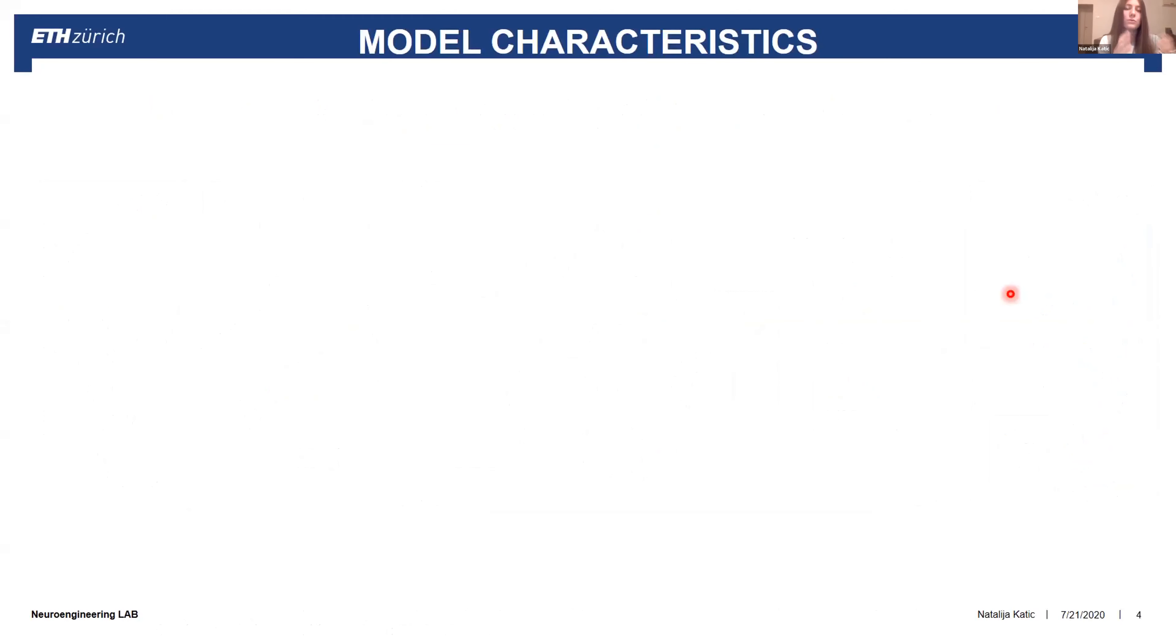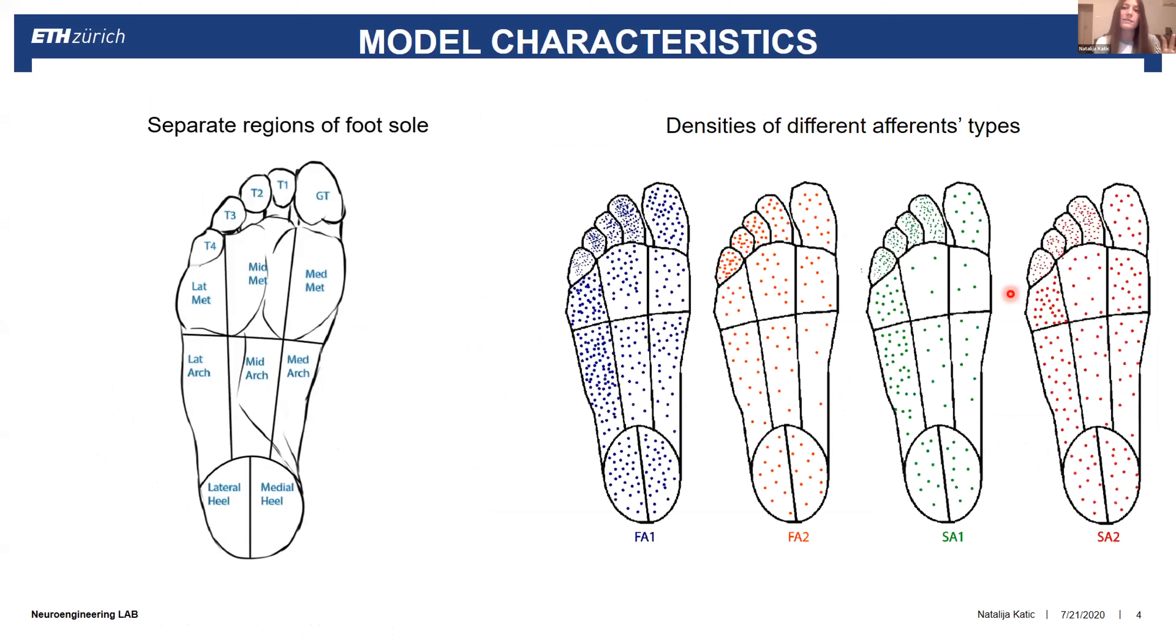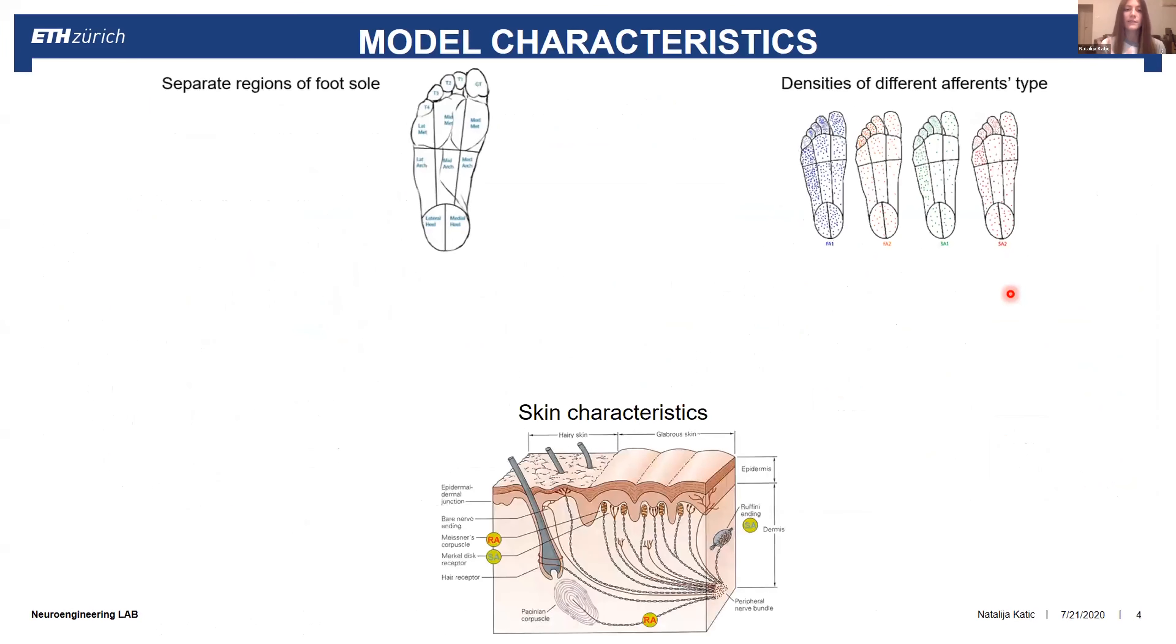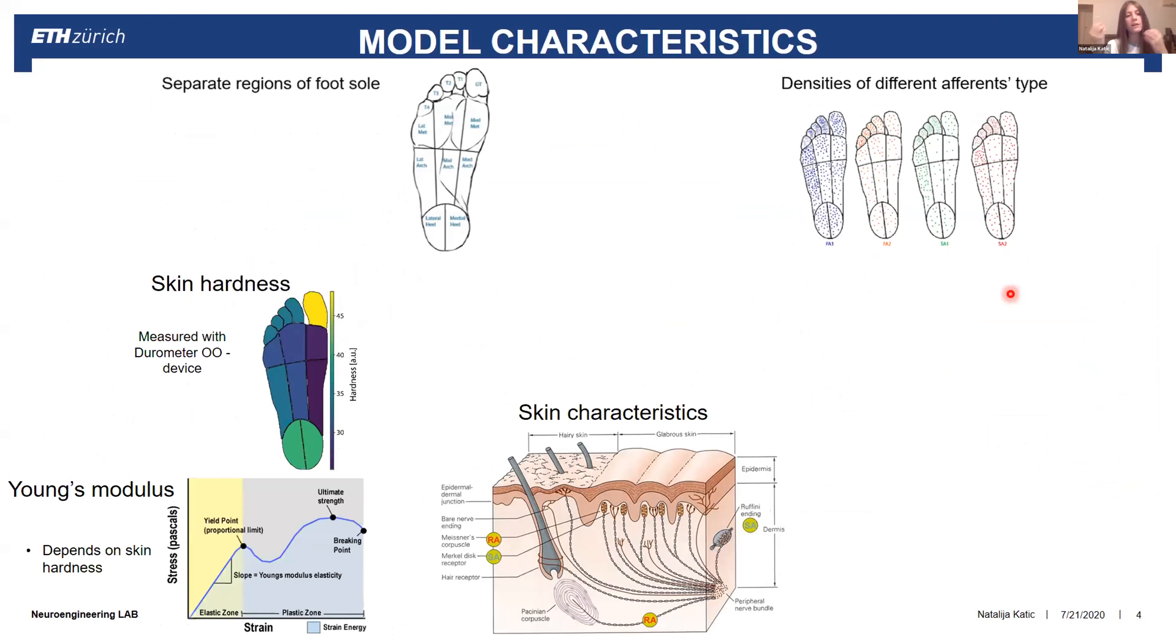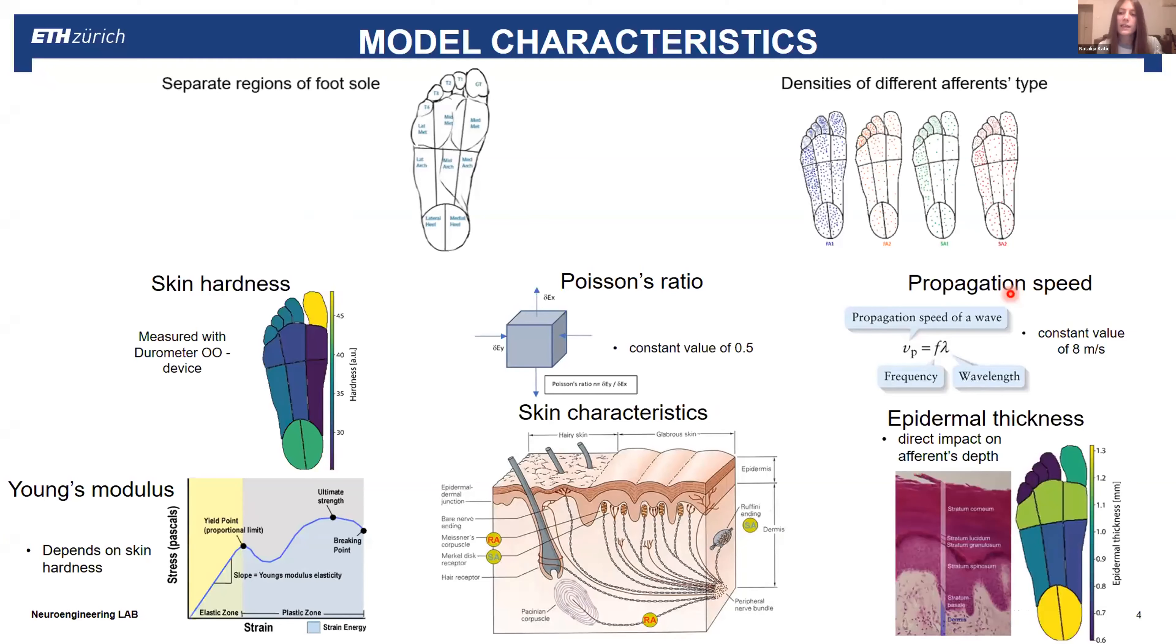In order to make this model, first we divided the surface of the foot sole into separate regions because every region has unique characteristics. We added the densities of different afferent types and different skin characteristics like skin hardness, which indicates how resistant skin is to indentation. It is measured for every skin region with a durometer device. We use these values to calculate the Young's modulus for every foot region. We also incorporated Poisson's ratio, propagation speed (how fast the stimuli is going through the skin), and the epidermal thickness that is measured with ultrasound for every foot region. This is quite important because it has direct impact on the afferent depth.